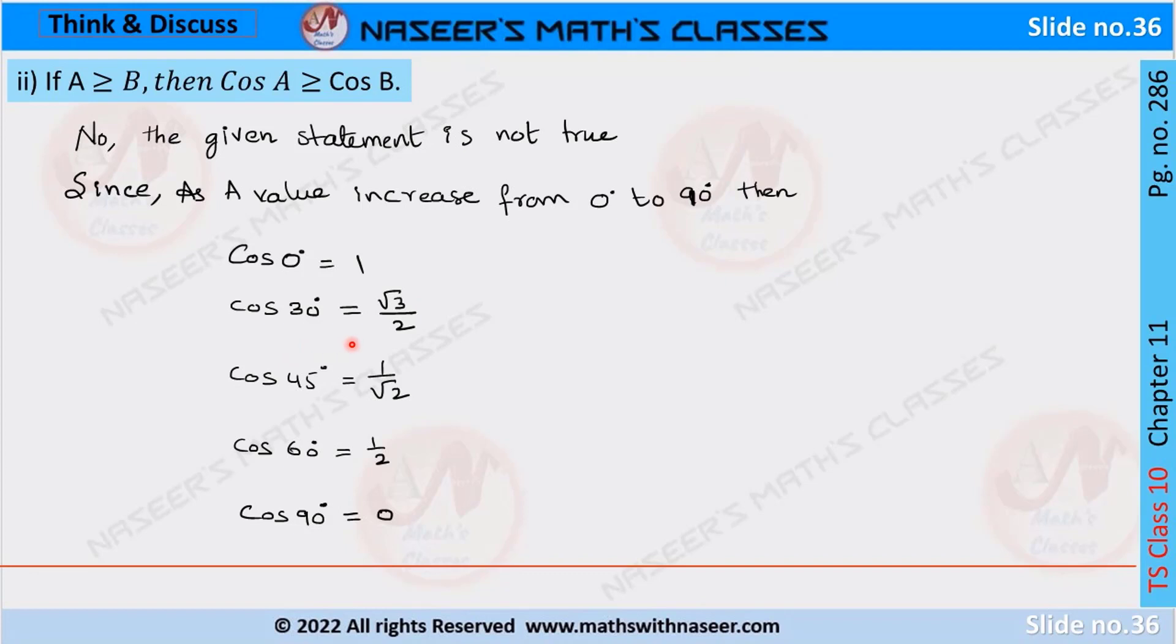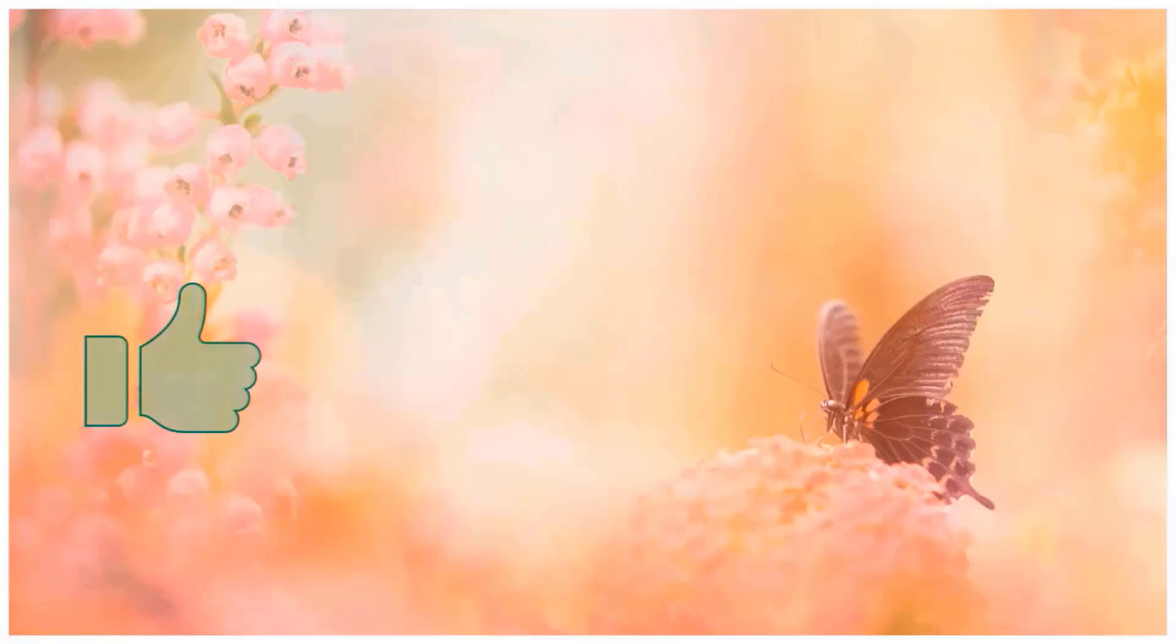Cos 30 degrees is equal to root 3 by 2, cos 45 degrees is equal to 1 by root 2, cos 60 degrees is equal to 1 by 2, cos 90 degrees is equal to 0.